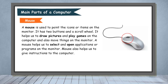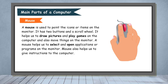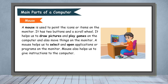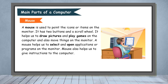Keyboard helps us to give instructions to the computer. Mouse. A mouse is used to point the icons or items on the monitor. It has two buttons and a scroll wheel. It helps us to draw pictures and play games on the computer and also move things on the monitor. A mouse helps us to select and open applications or programs on the monitor. Mouse also helps us to give instructions to the computer.